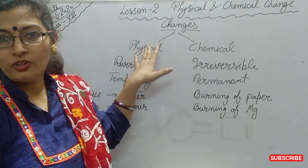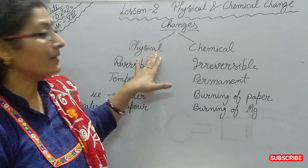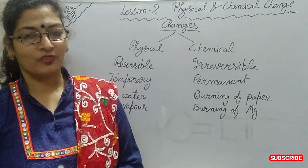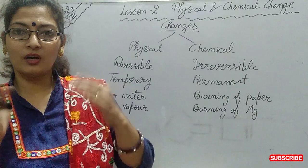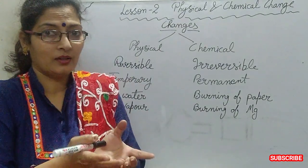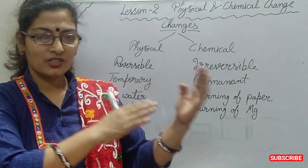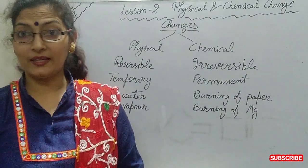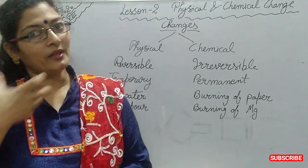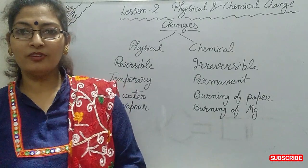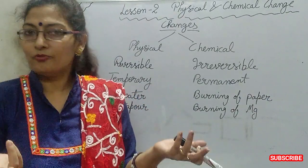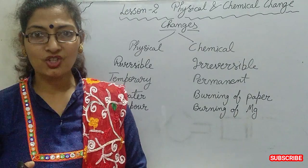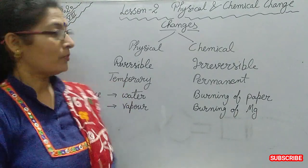There are mainly two types of changes: physical and chemical. Physical changes are reversible — they can be reversed back. It is a temporary change, not permanent. For example, when we take ice out of the freezer it becomes water, and when we put that water back in the freezer it becomes ice again. So this is a physical change — temporary and reversible.